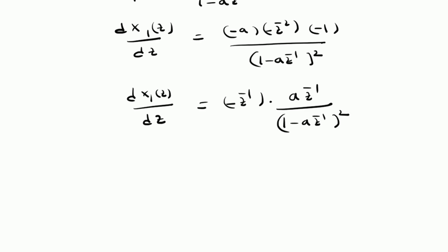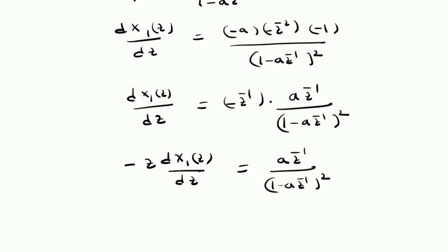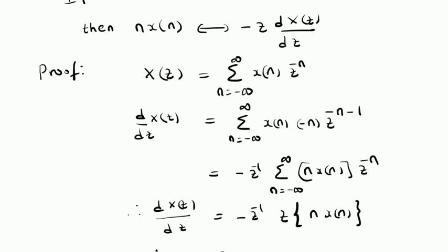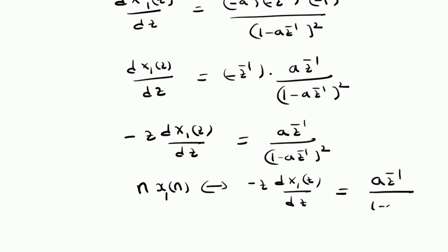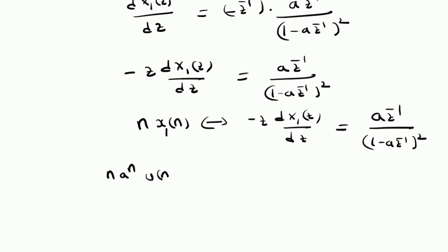By taking minus Z inverse to the left side, we have minus Z times the derivative of X1 of Z with respect to Z equals a Z inverse divided by 1 minus a Z inverse whole square. By using the differentiation property — the Z transform of n times X of n is given by minus Z times the derivative of X of Z — minus Z times the derivative of X1 of Z is the Z transform of n times X1 of n. Therefore, the Z transform of n times a power n times u of n is a Z inverse divided by 1 minus a Z inverse whole square.